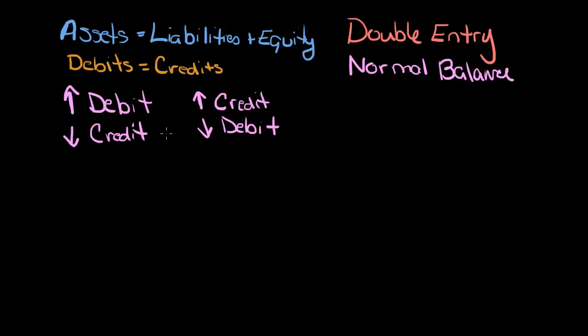Now there are a couple accounts that are tricky. Those accounts are called contra accounts. A contra account works the opposite way that a normal account of that class would. For example, one contra account that we see all the time is accumulated depreciation.